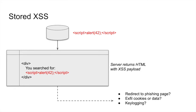Stored cross-site scripting attacks are very similar to reflected attacks in that the malicious payload is reflected back to the user in the HTML returned from the server. The core difference is that in a stored cross-site scripting attack, that malicious payload is stored in the database, and it can get there by any number of mechanisms. For example, a malicious user might try to input a cross-site scripting attack into a comment field on somebody's blog or as a product review on an online store.